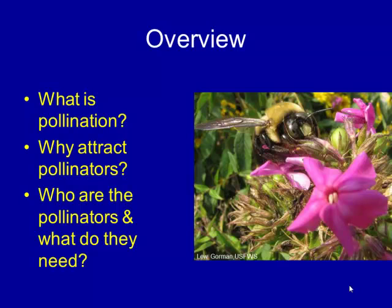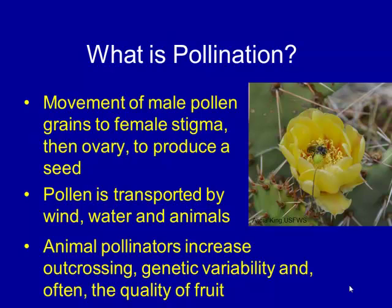As Diana said, I'm going to talk a little bit about what pollination is, why you might want to attract pollinators, and who the pollinators are and what they need. For those of you who aren't biologists, pollination is movement of the male pollen grain to the female part of the plant. It gets stuck to the stigma and then sends a shoot down to the ovary if it's successful to produce a seed. Pollen can be transported by wind, by water, or by animals.